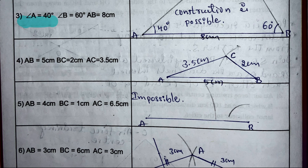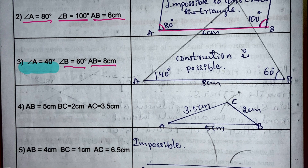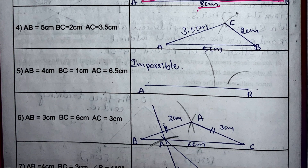Third example: angle A = 40°, angle B = 60°, AB = 8 cm. First, draw AB = 8 cm. Then, taking A as center, make an angle of 40°; taking B as center, make an angle of 60°. The two lines meet at a point — so this construction is possible.